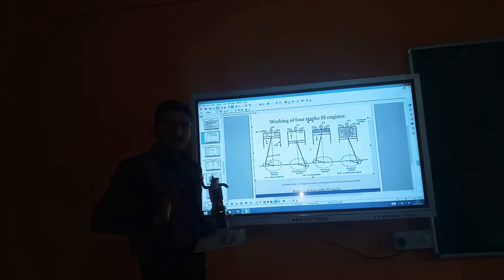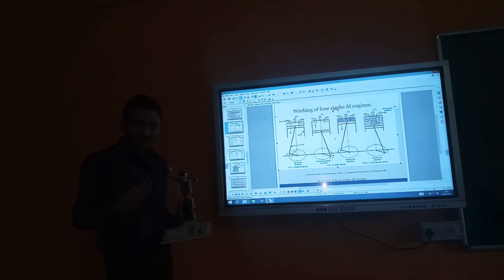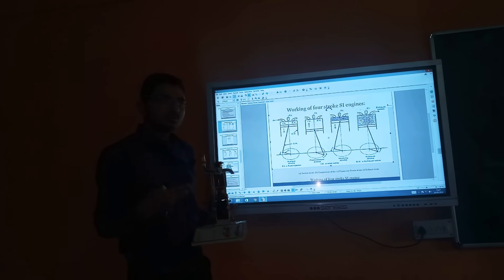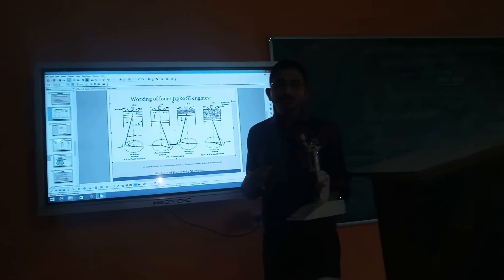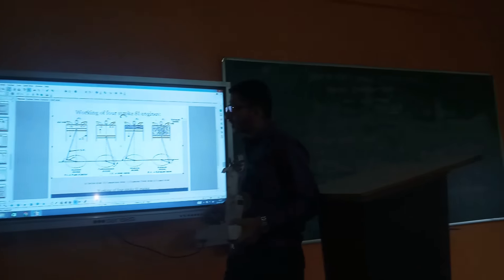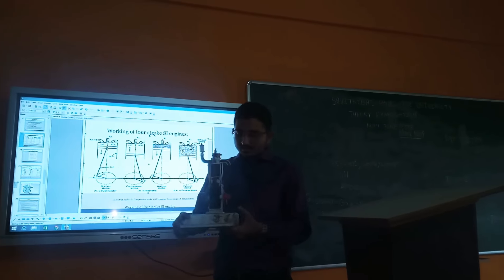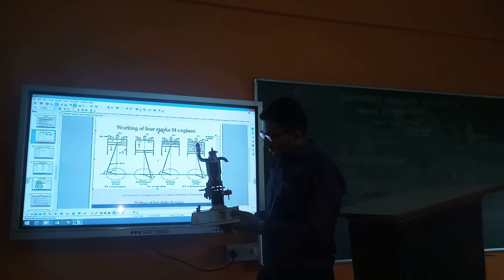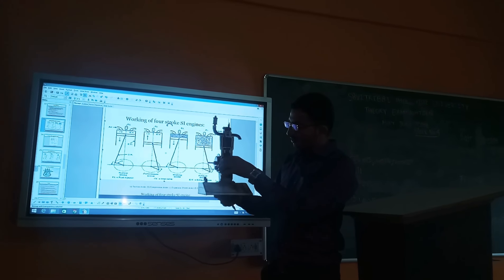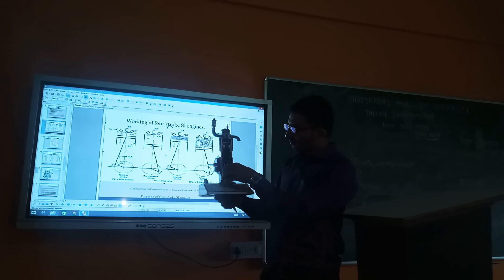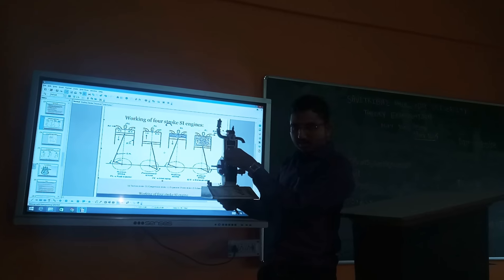When the cycle is completed in 4 strokes of the piston and two revolutions of the crankshaft — that is the 4-stroke engine. Here we have a demonstrating model. This is the crankshaft; when the crankshaft moves, it is connected to the connecting rod.